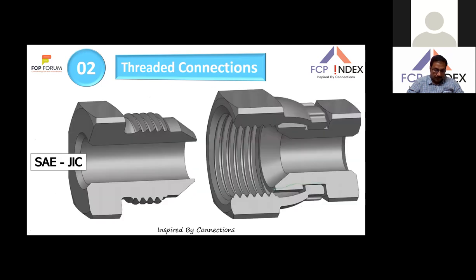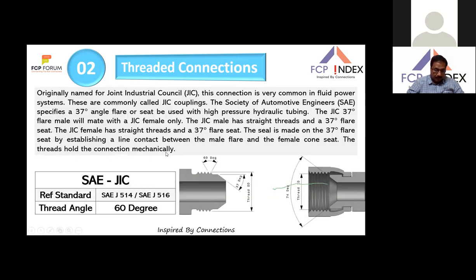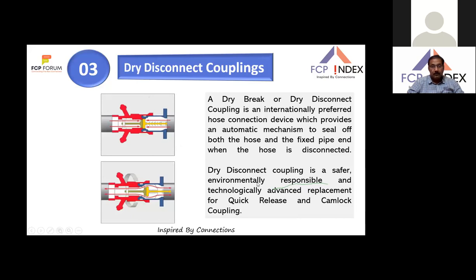JIC — originally named Joint Industrial Council — is one of the most popular American thread connections in fluid power systems. The Society of Automotive Engineers specifies a 37-degree angle flare. The JIC male has a straight thread and 37-degree flare; the JIC female has a straight thread and 37-degree seat. The seal is made on this 37-degree contact line, holding the connection mechanically. The standard is SAE J514, geometry per SAE J516, and the thread angle is 60 degrees.